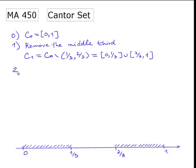Now the next step is to remove the middle third of each of these two intervals. So we construct the next step set C2 by removing from C1 two intervals. The middle third of the first sub-interval will be 1/9 to 2/9, and then for the next one we have 7/9 to 8/9.